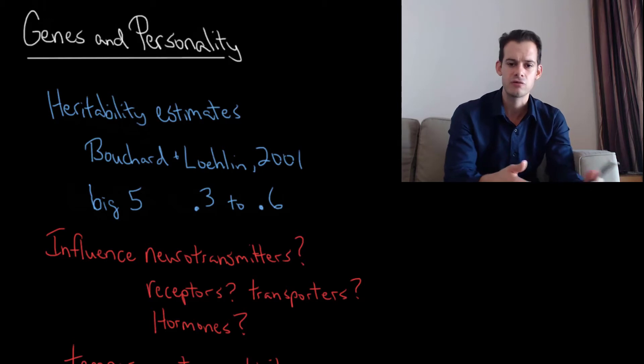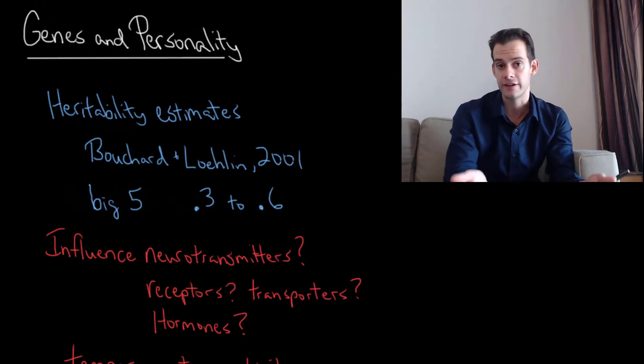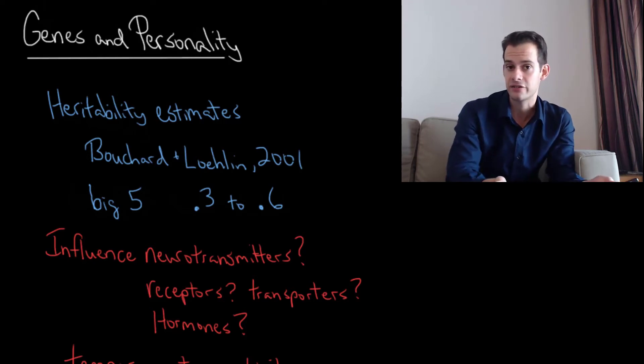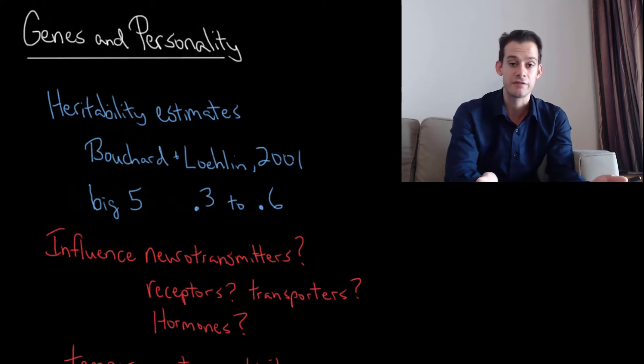Nevertheless, we can see this range from about 0.3 to 0.6 means when we ask the question, why do people have different scores for these personality traits? About 30 to 60% of the answer is people have different genes, but this leaves ample room for the environment. Certainly the rest of the reason is people have different environments and those are also shaping their personalities.